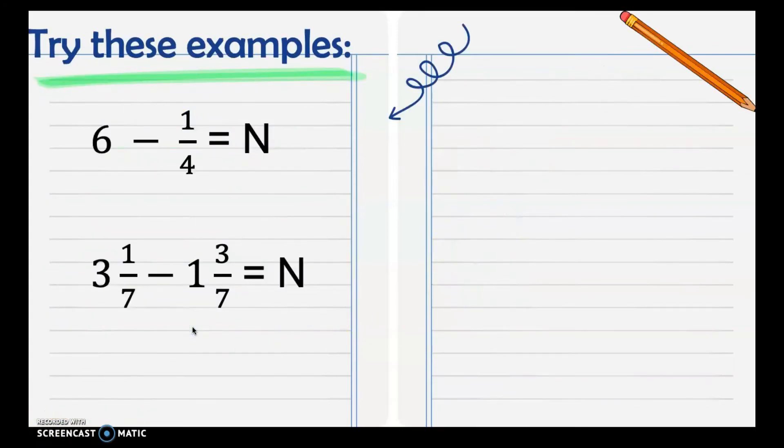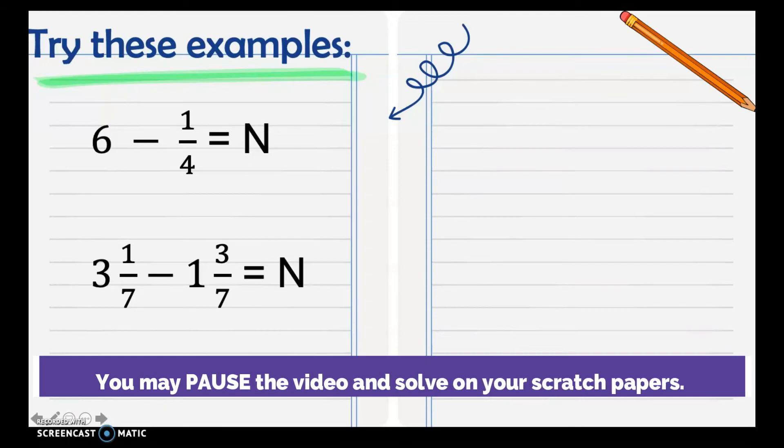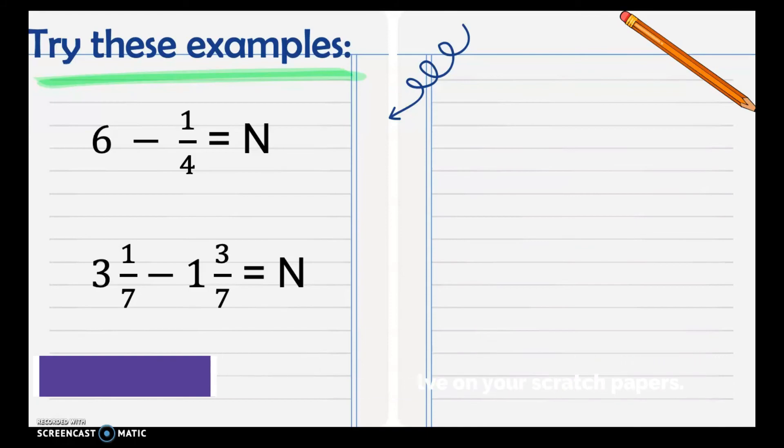I want you to try these examples. Check if your answer is correct. For 6 minus 1/4, we have 5 and 3/4. And 3 and 1/7 minus 1 and 3/7 is equal to 1 and 5/7.